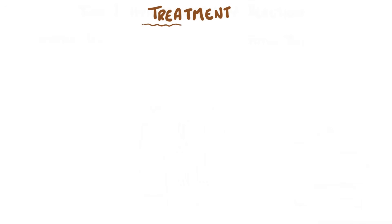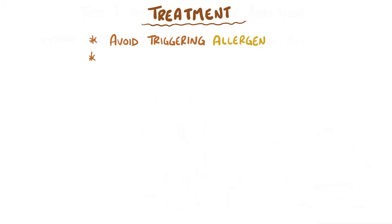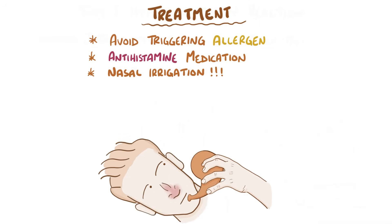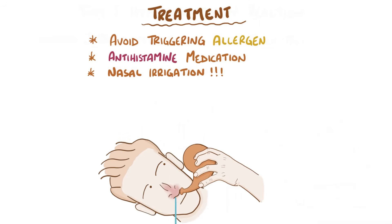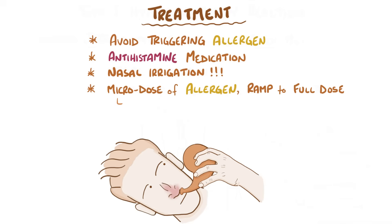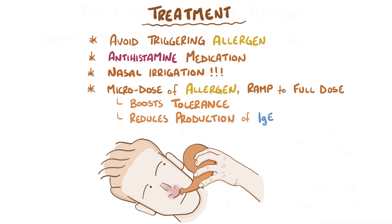Typically, the best thing for allergic rhinitis is to simply avoid the triggering allergen if possible. If there are symptoms, antihistamine medications can be used to suppress the effect of mast cell degranulation. Nasal irrigation can flush out the sinuses, which reduces the congestive symptoms of allergic rhinitis. In some situations, it's also possible to rewire the body's immune response to an allergen by exposing it to micro doses and slowly ramping up to a full dose of the allergen, which gradually boosts tolerance by reducing the immune system's tendency to produce IgE each time.